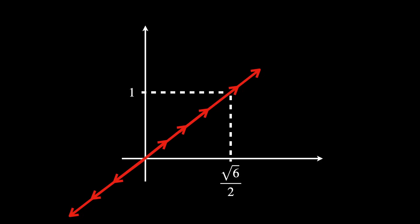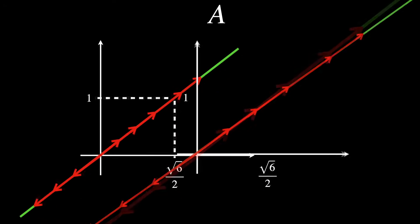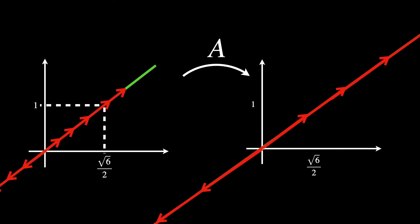So after the transformation A, all the vectors in the line defined by the direction square root of six over two, one, were scaled by a factor of one plus the square root of six.